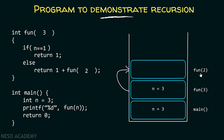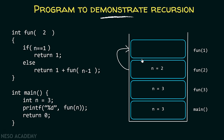Now fun(2) is under execution, so n equals 2. We check the condition: is n equals 1? As 2 is not equal to 1, it is false, so the else part gets evaluated: return 1 plus fun(n minus 1). As n is 2, n minus 1 is 1, so from fun(2) we are calling fun(1). The control transfers from fun(2) to fun(1), and the activation record of fun(1) with n equals 1 is maintained inside the stack.